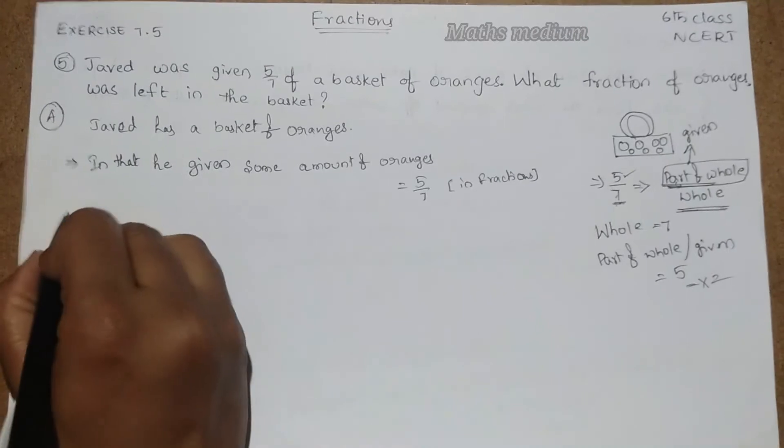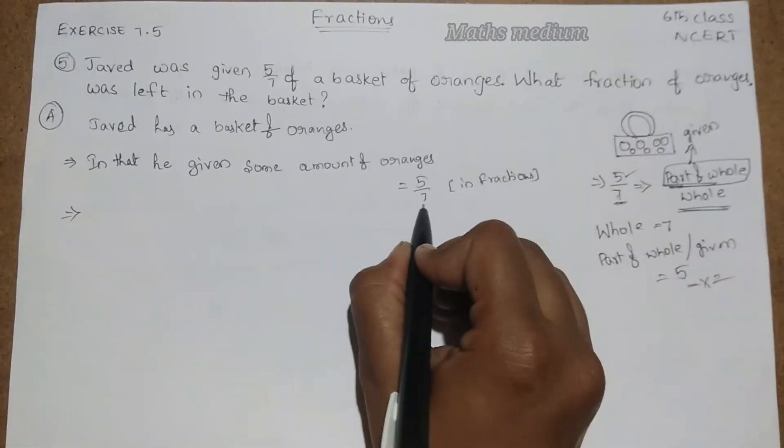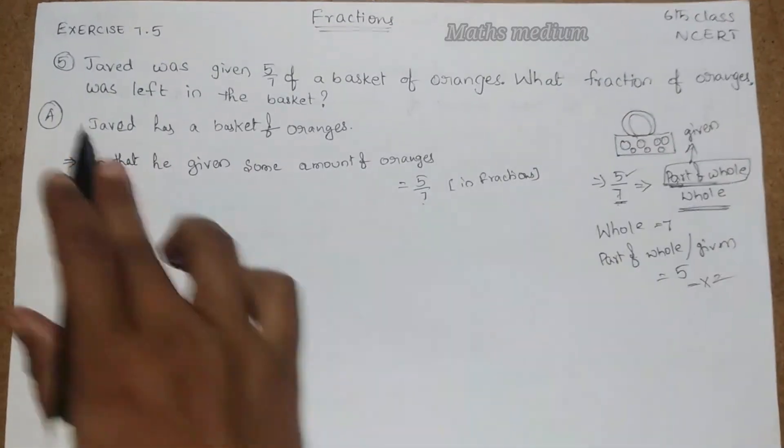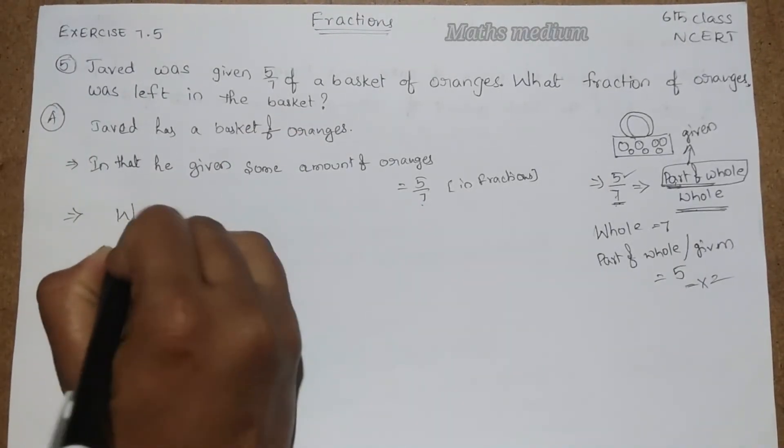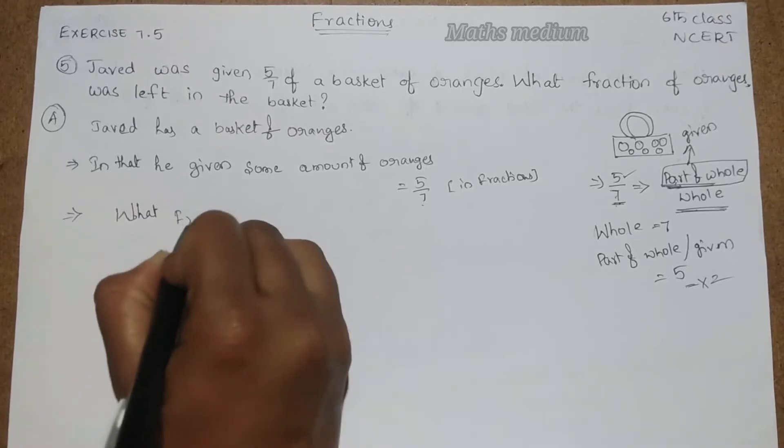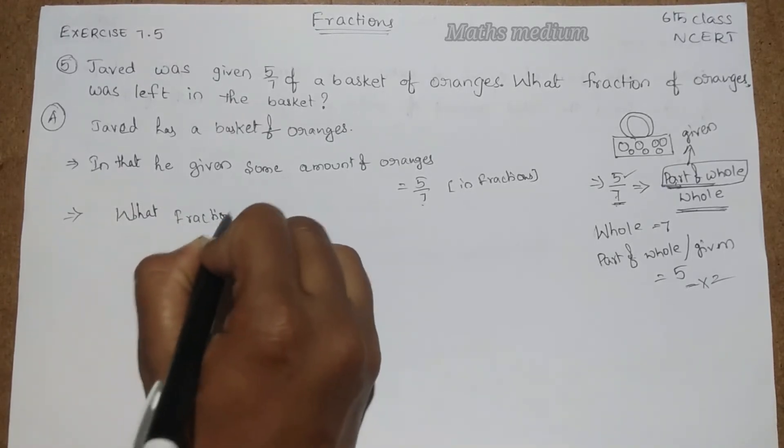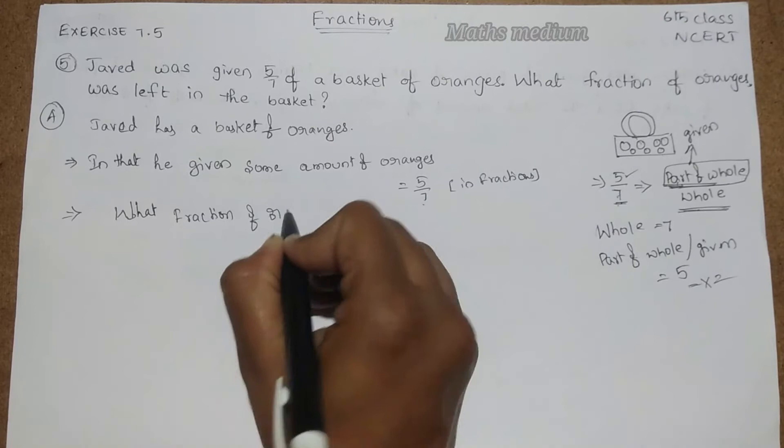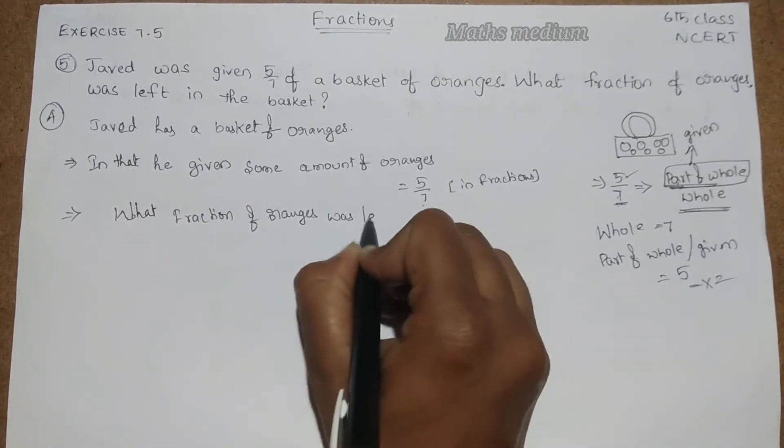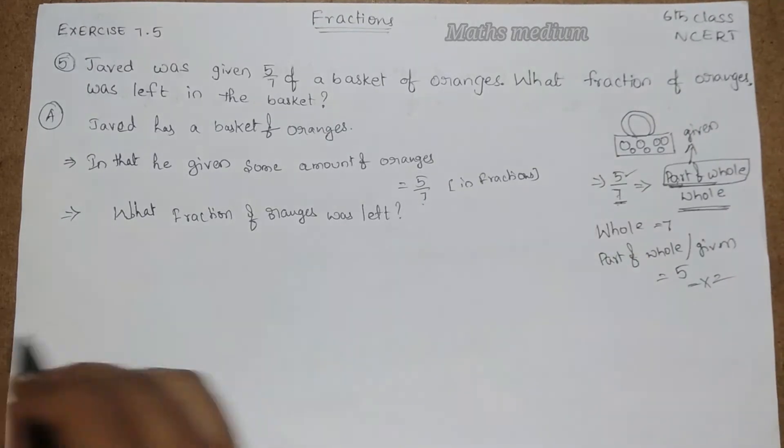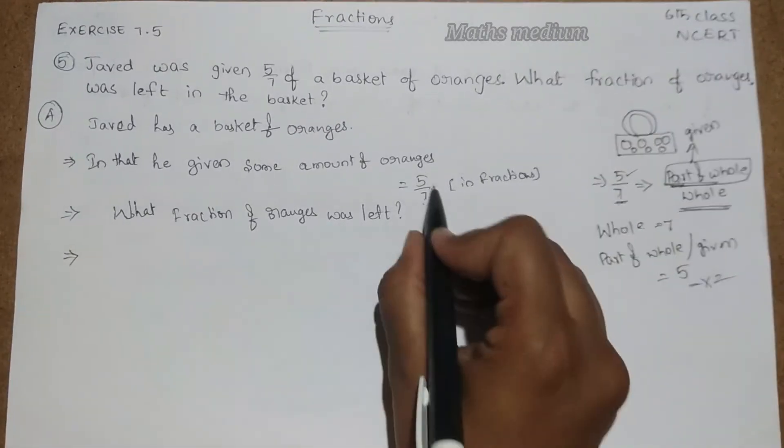So now, here 5 by 7. What fraction of oranges was left? This is the 5 by 7.